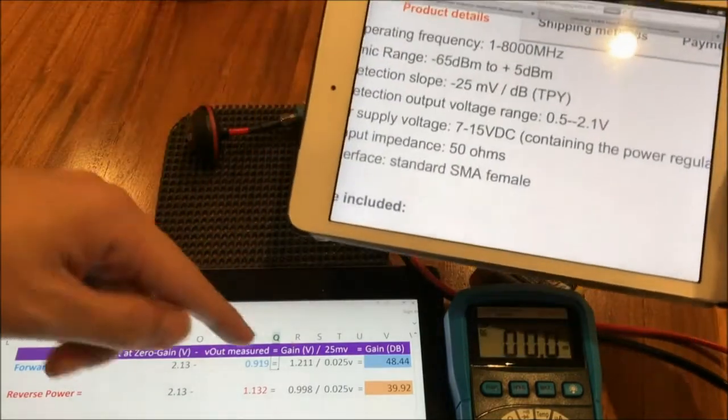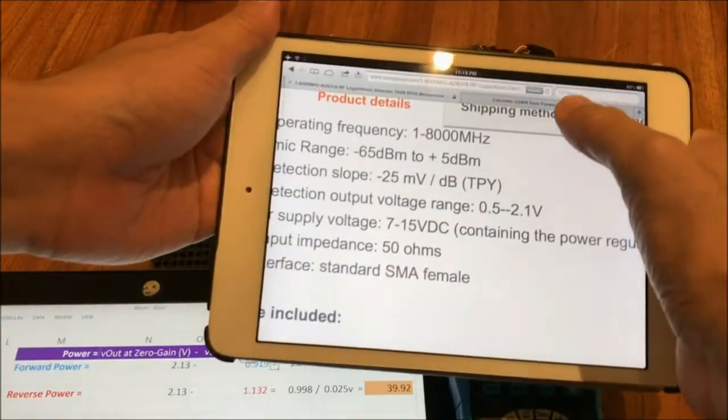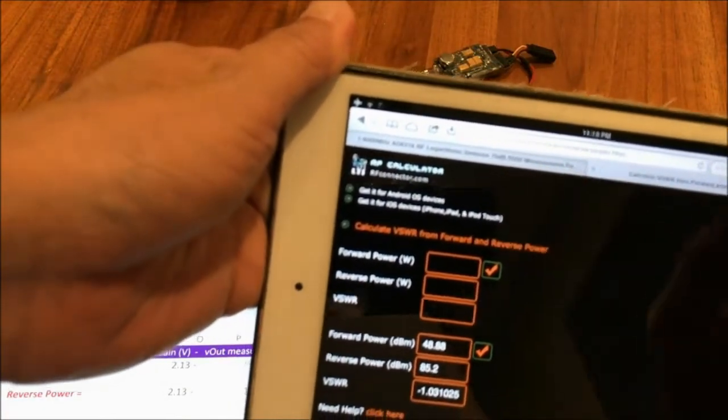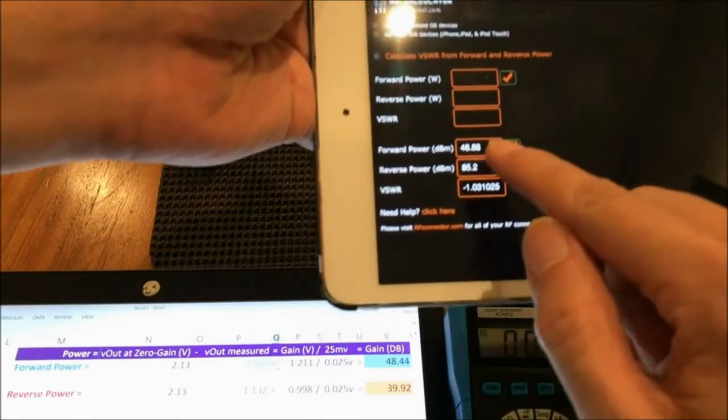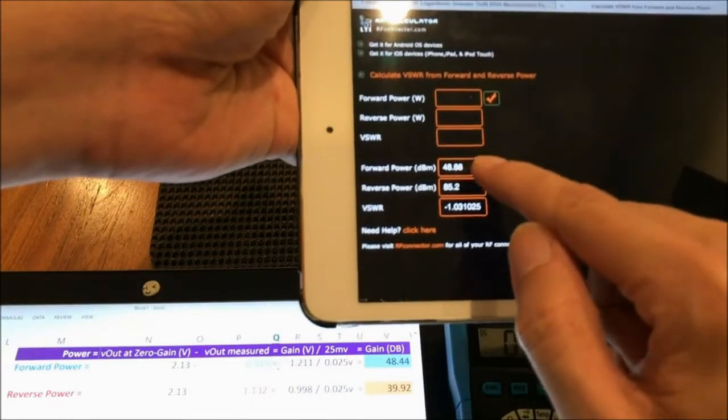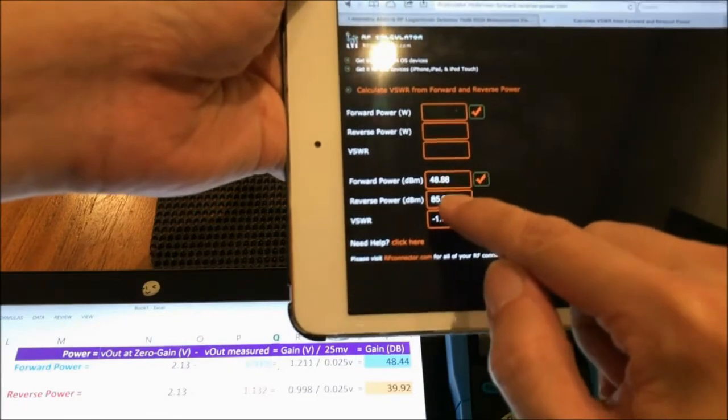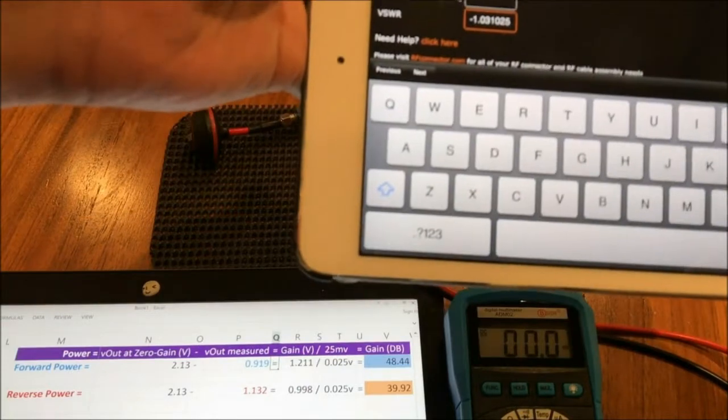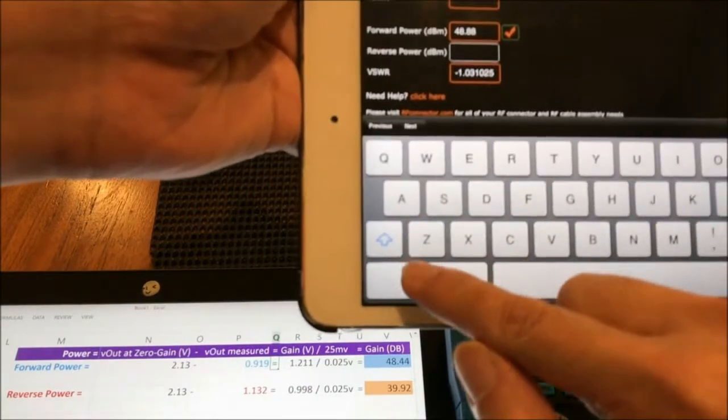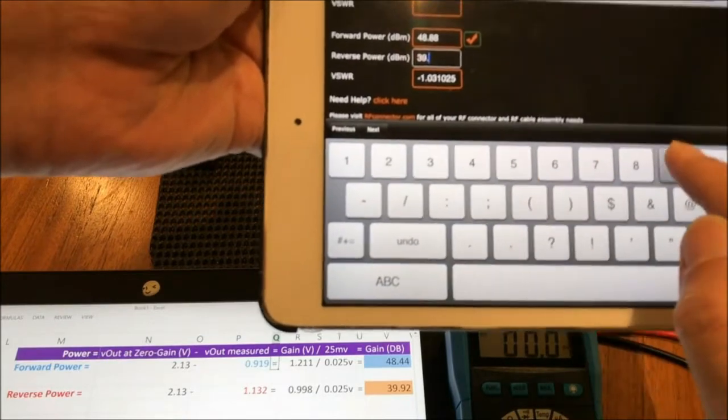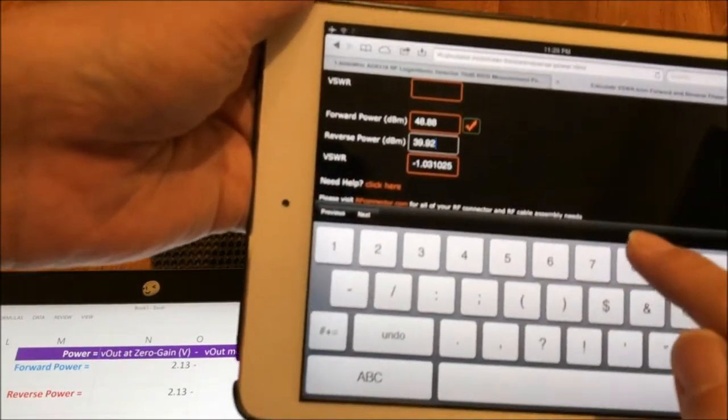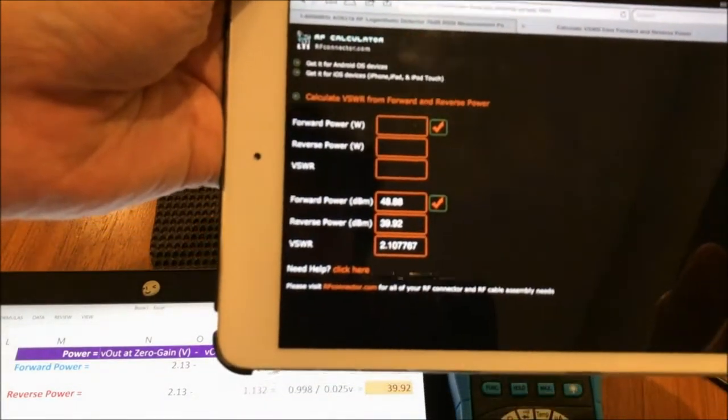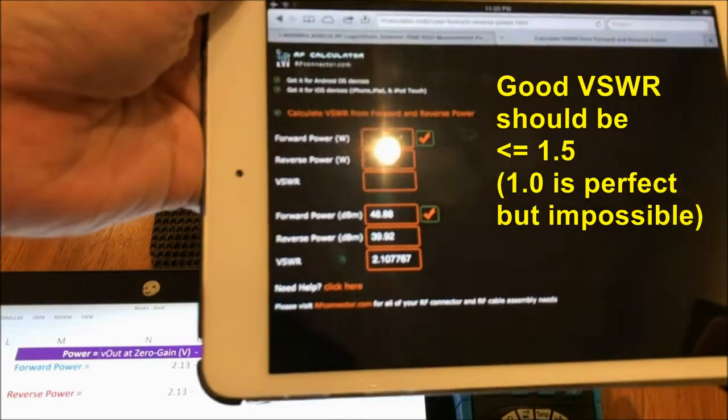So now that we have got these 2 values, we can calculate the VSWR. I'm using this calculator online. It's called the RF calculator dot MOBI. So just going to punch in the forward power, which is 48.88, and the reverse power, which is 39.92. Okay. And then we hit this button here. So the VSWR is about 2.1.